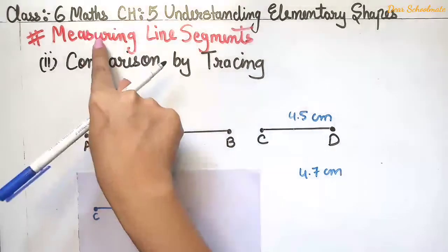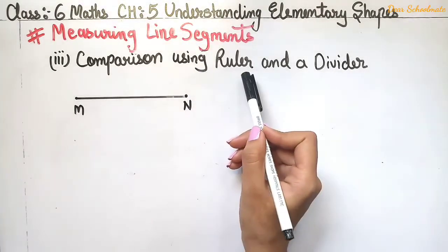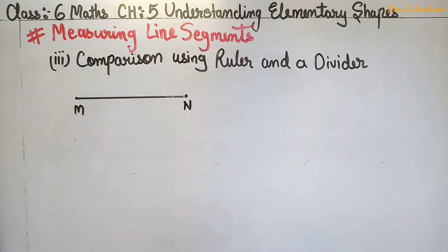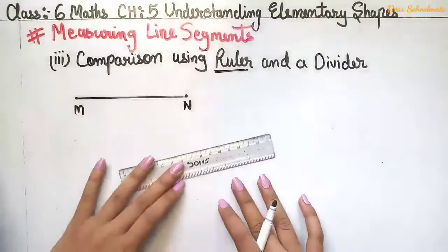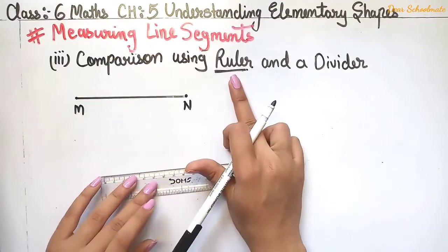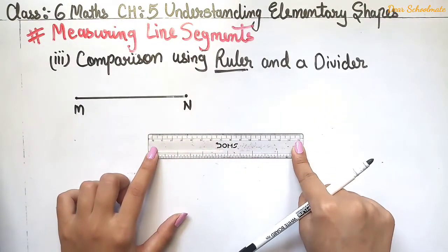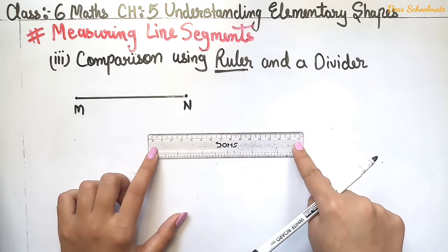The third method of measuring a line segment is comparison by ruler. In your compass box there is a tool called a ruler, or scale. It measures from 0 to 15 centimeters. At the bottom, between 0 and 1, you can see many small lines — these divide one centimeter into 10 equal parts.